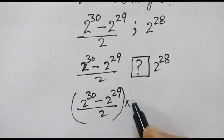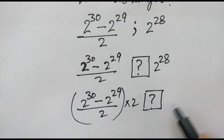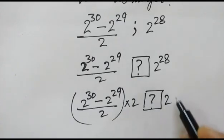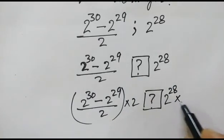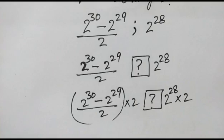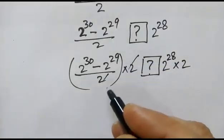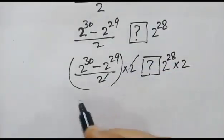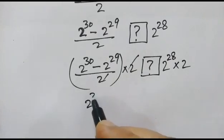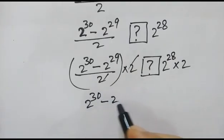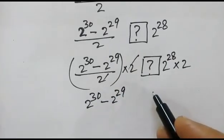Now we will multiply both sides by 2. On the left side, 2 and 2 cancel out, so we have 2 to the power 30 minus 2 to the power 29.